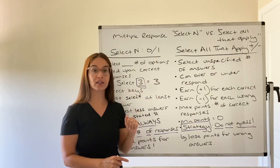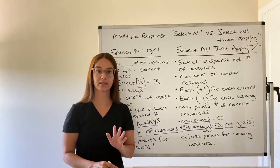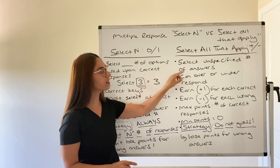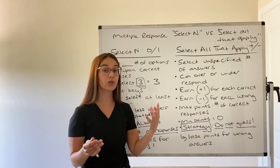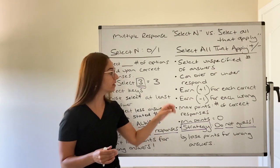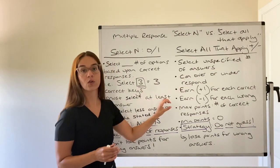Versus select all that apply, you do not guess. Remember, select all that apply, you select an unspecified number of answers. So it just says select all that apply. You don't know how many answers are correct. You can over or under respond, meaning if there's four correct answers, you can pick two or you can pick five. It's not going to stop you from selecting less or more.